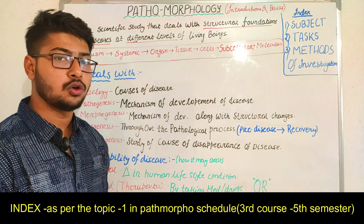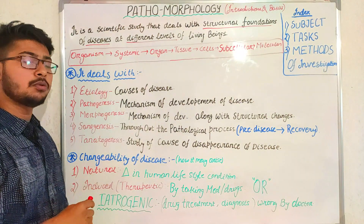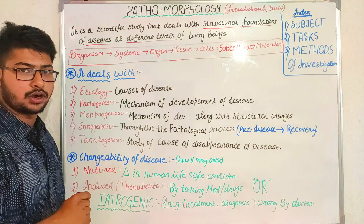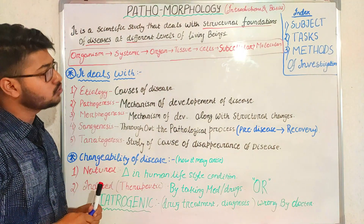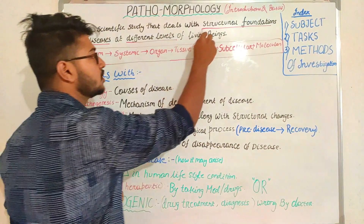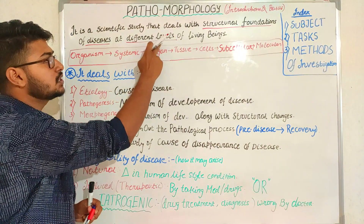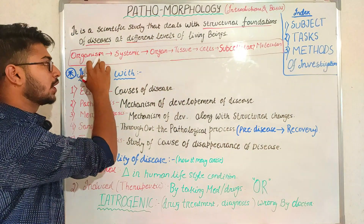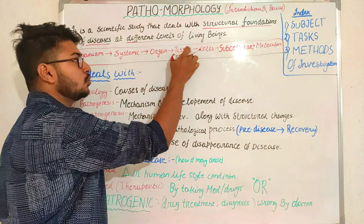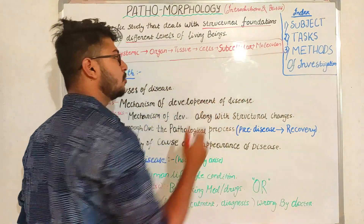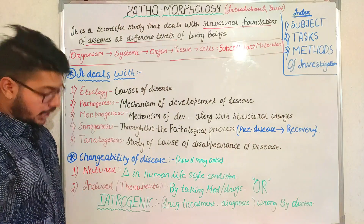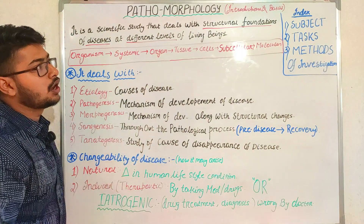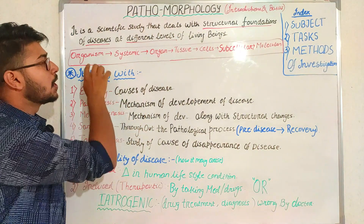So what is pathomorphology? Pathomorphology is a scientific study that deals with the structural foundation of diseases at different levels of living organisms. There are three important terms: first, structural foundation; second, diseases; and third, different levels of living organisms. Those levels are: organism, systemic, organ, tissue, cells, subcellular, and finally the molecular level of organization. If this organization is affected by a certain kind of disease and there is a change in the structural foundation or ultrastructure, that type of study is called pathomorphology.